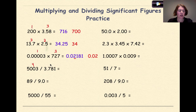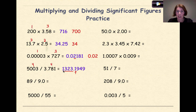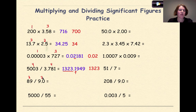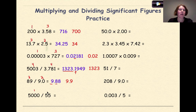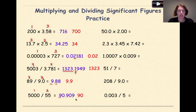Next example has four significant figures divided by four significant figures, giving a long number, but the answer can only have four sig figs — rounding gives 1,323. Then 89 divided by 9.0: 89 has two sig figs, and 9.0 has two sig figs because the decimal is present. Dividing gives 9.88, so I keep the 9, round the 8 up, and get 9.9. Then 5,000 divided by 55: 5,000 has one significant figure, 55 has two. Dividing gives 90.909, but I can only have one significant figure — final answer is 90.